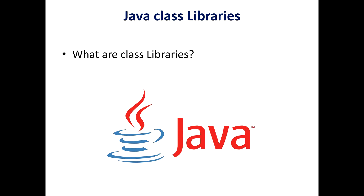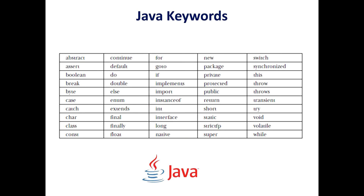Keywords cannot be used as identifiers — they cannot be used as names for variables, classes, or methods. The keywords 'const' and 'goto' are reserved but not used. In addition, Java reserves the words 'true' and 'false' as defined values; you may not use these words for the names of variables, classes, and so on.